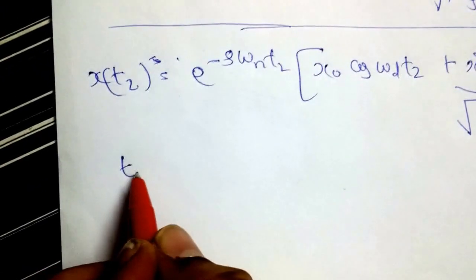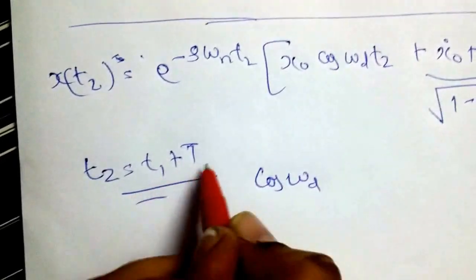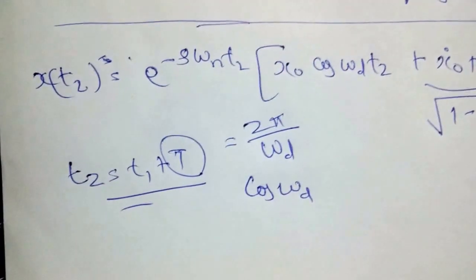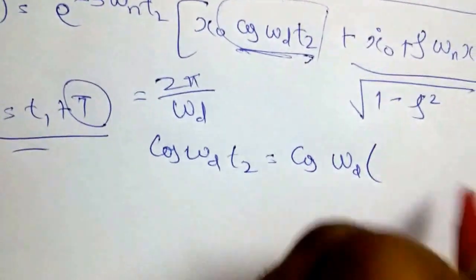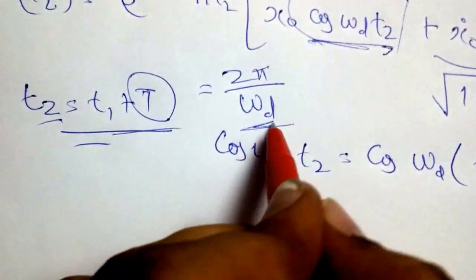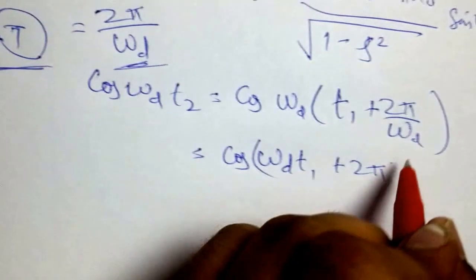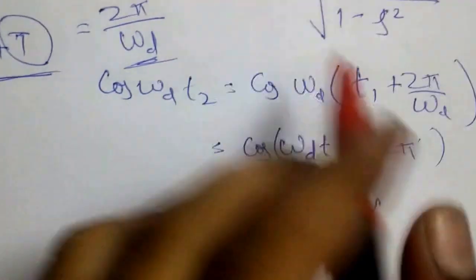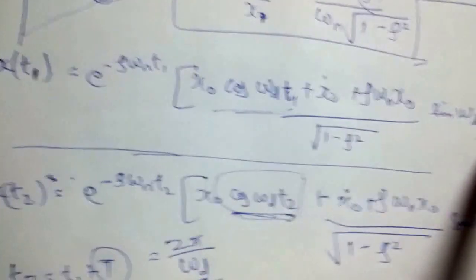Substituting t2 = t1 + T, where T = 2π/ω_d: cos(ω_d t2) = cos(ω_d t1 + 2π/ω_d × ω_d) = cos(ω_d t1 + 2π). Since the cosine function is periodic with period 2π, this equals cos(ω_d t1), which is the same as the corresponding term in x(t1).